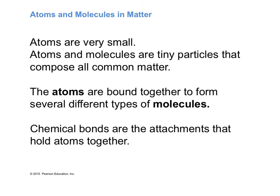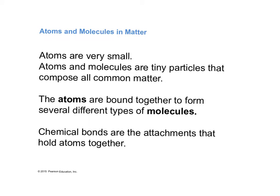The smallest thing that can be divided without losing its identity is called an atom. You can split the atom, but then it no longer has the same identity. Later we'll learn about protons, neutrons, and electrons — those are subatomic particles — but the atom is the fundamental unit everything is made of. Molecules occur whenever atoms come together.